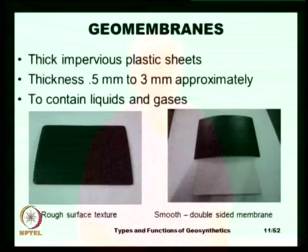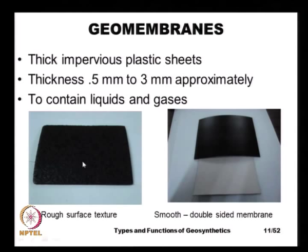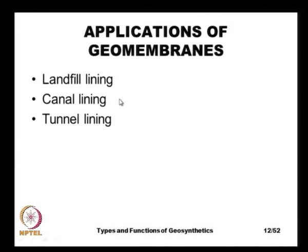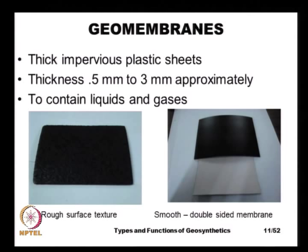There are several varieties of geomembranes. On the left-hand side we have a geomembrane with a rough texture, whereas on the right-hand side we have a very smooth geomembrane. Depending on the necessity, we may use either a smooth or a rough geomembrane.